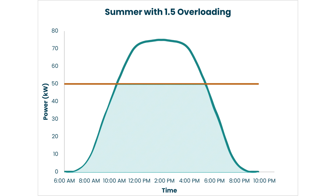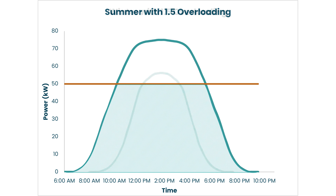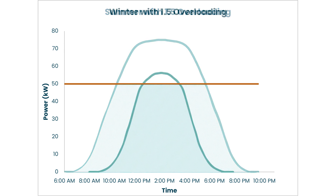However, this approach maximizes the inverter's throughput. In winter, we can then output 50 kilowatts for 2.5 hours with minimal clipping.